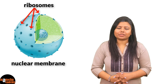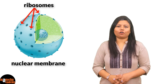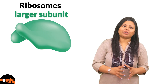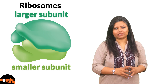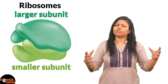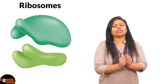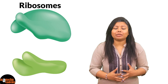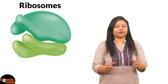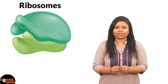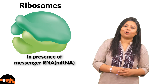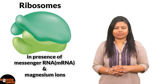Ribosomes consist of two subunits: the larger subunit and the smaller subunit. Usually the larger and the smaller subunit do not remain attached to each other, but during the process of protein synthesis they come together and attach in the presence of messenger RNA and magnesium ions.